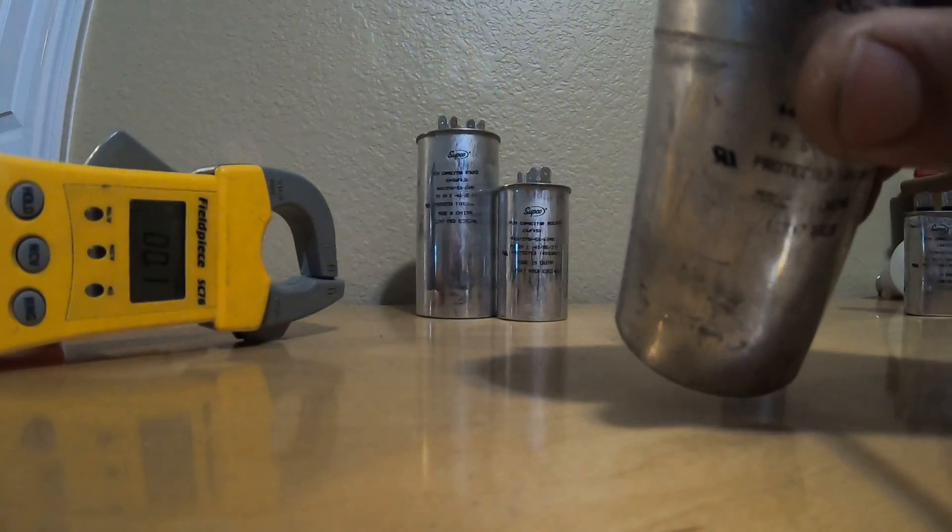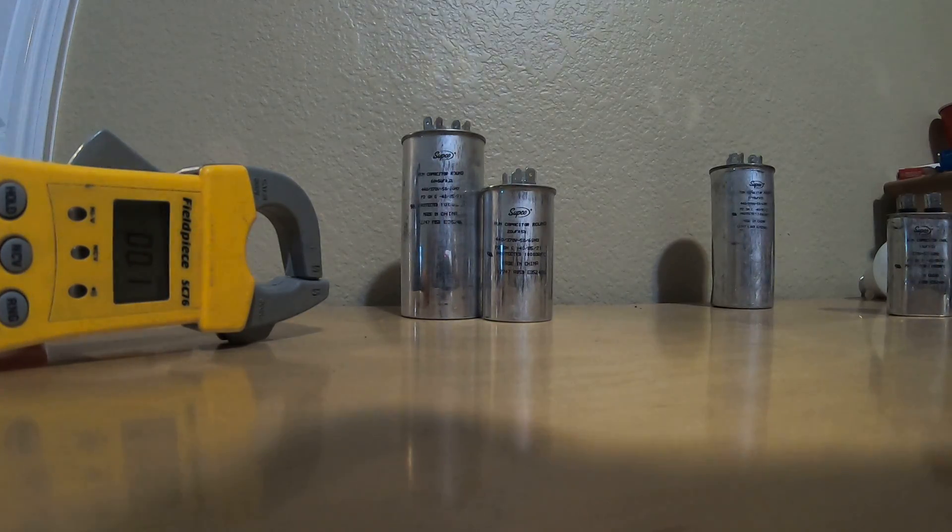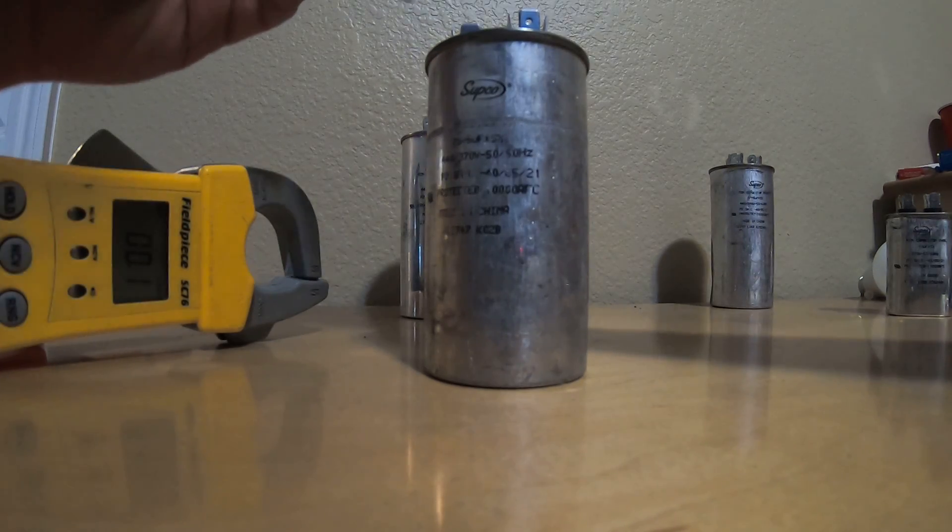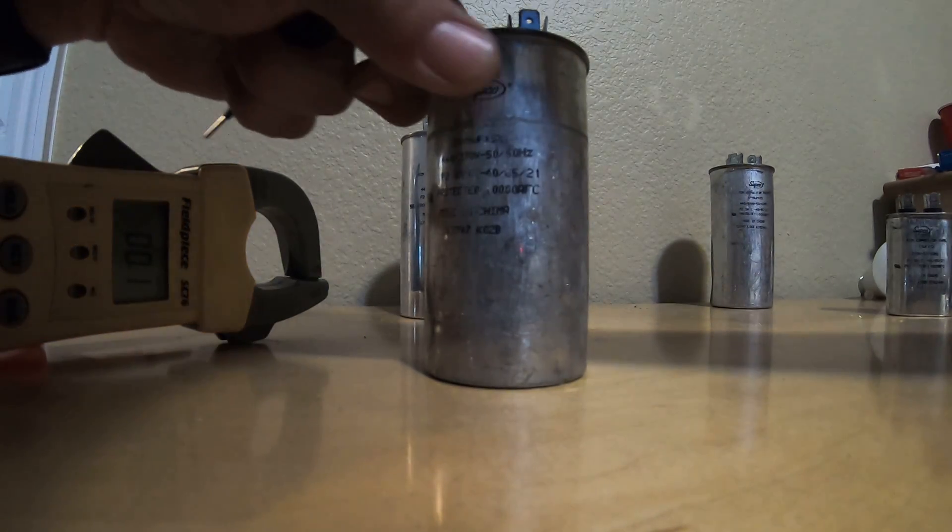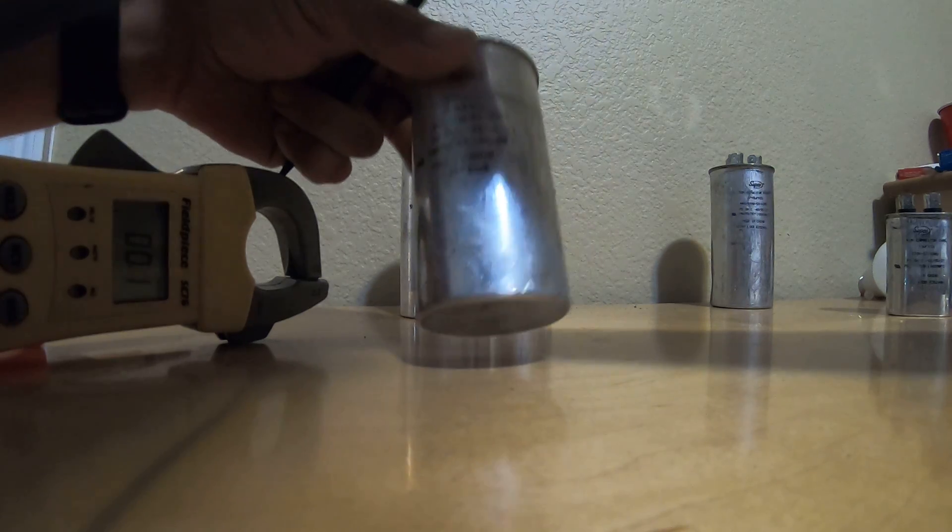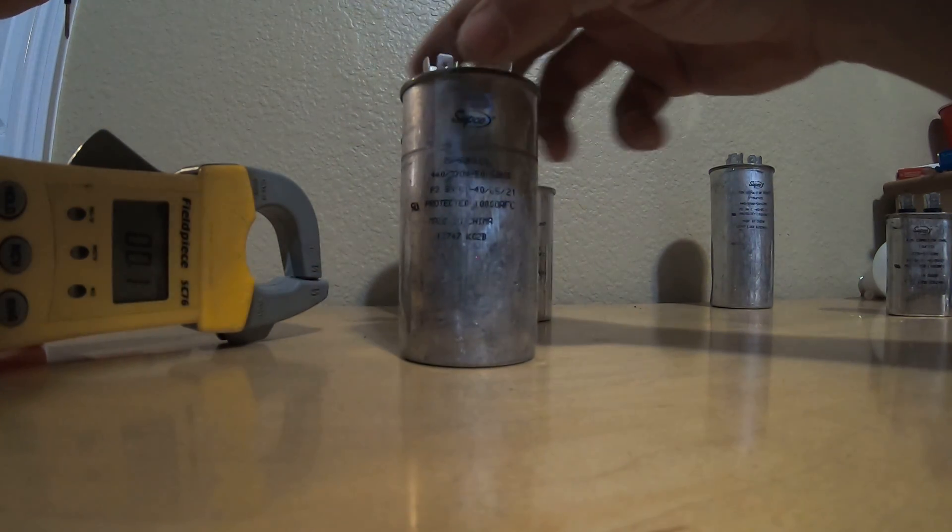I would never try to take that and say, well I've got a condenser fan motor that needs a 5 microfarad capacitor and put that 10 on there that's now reading a 6. I've seen guys do that and it does not work.